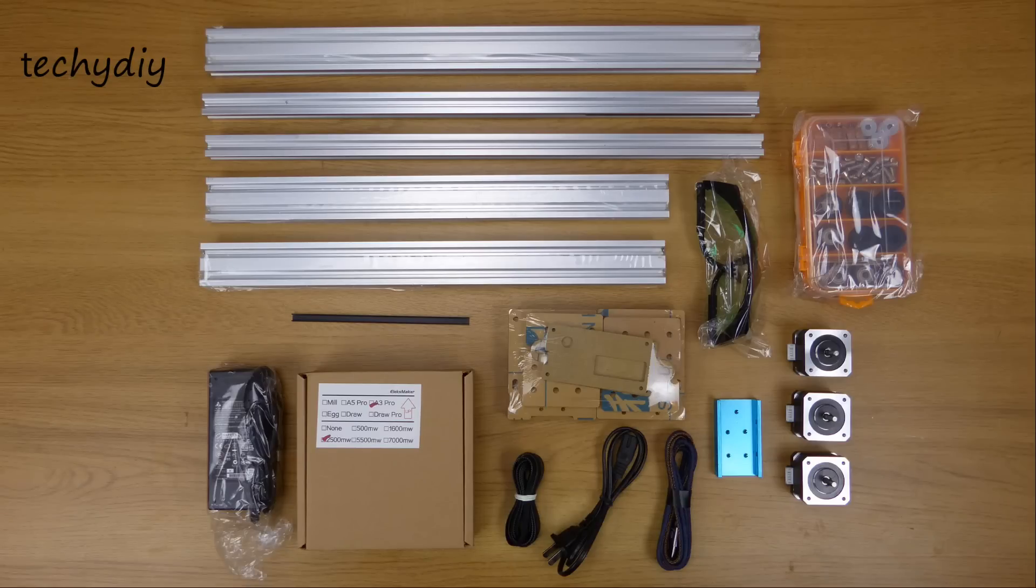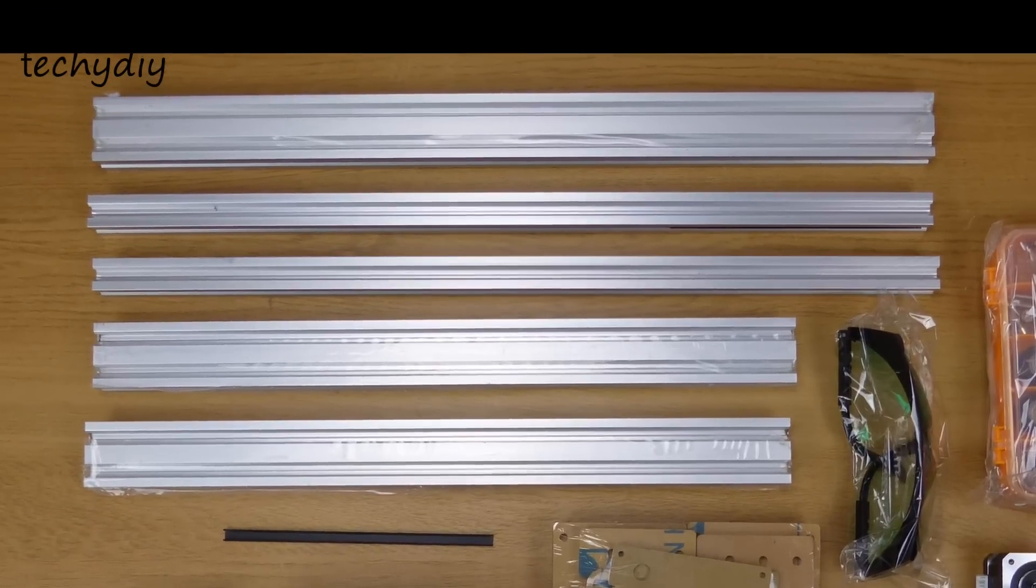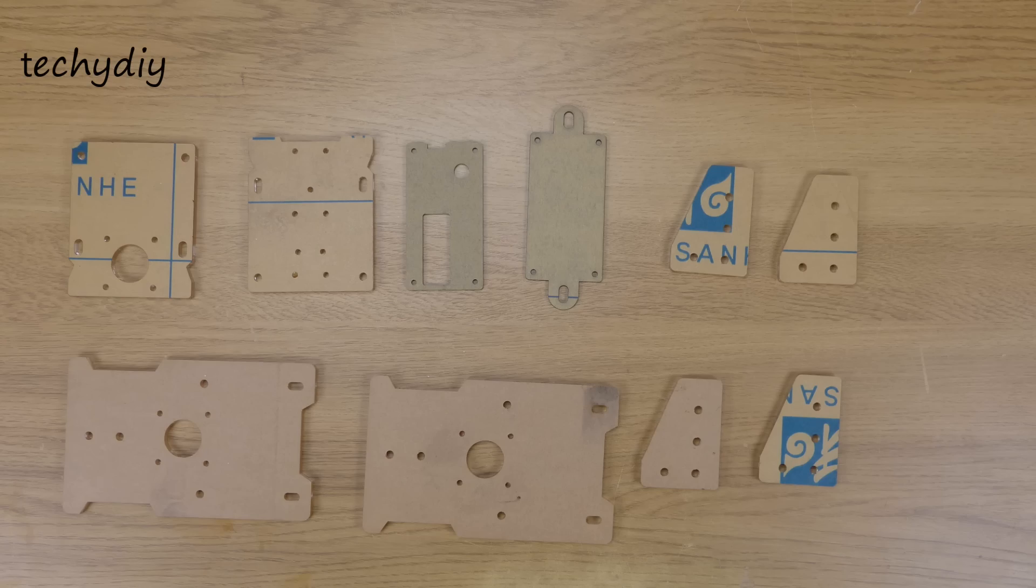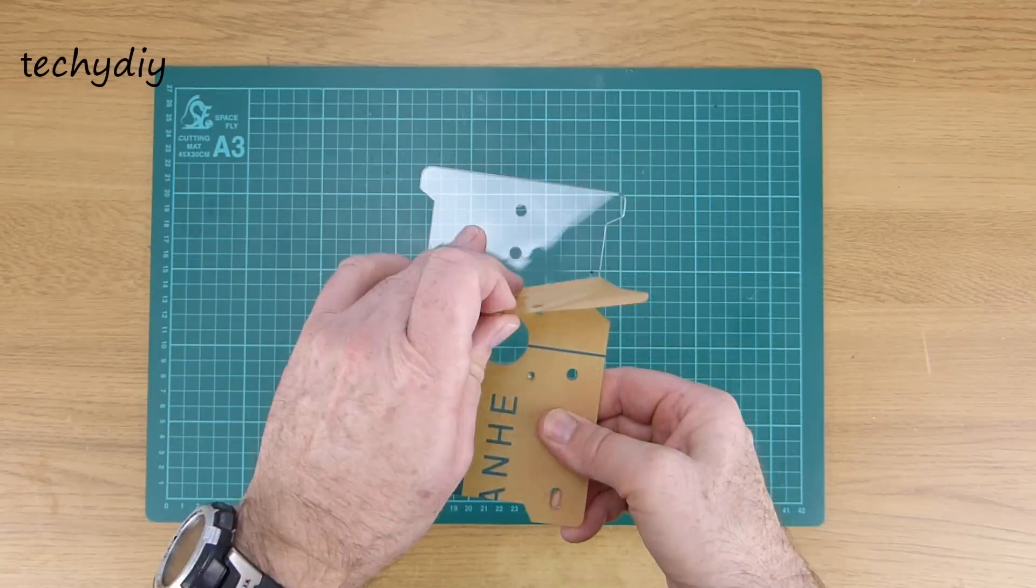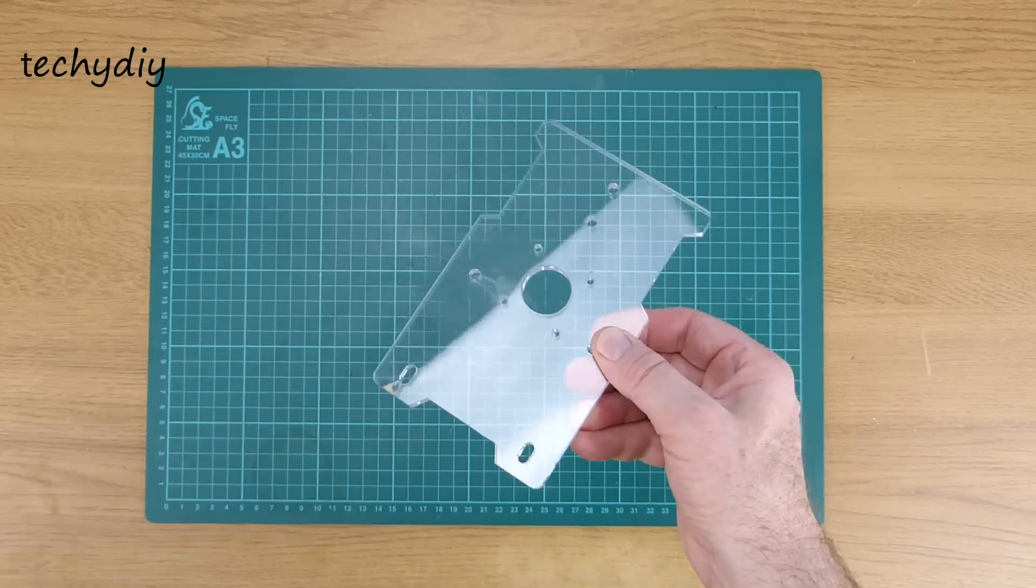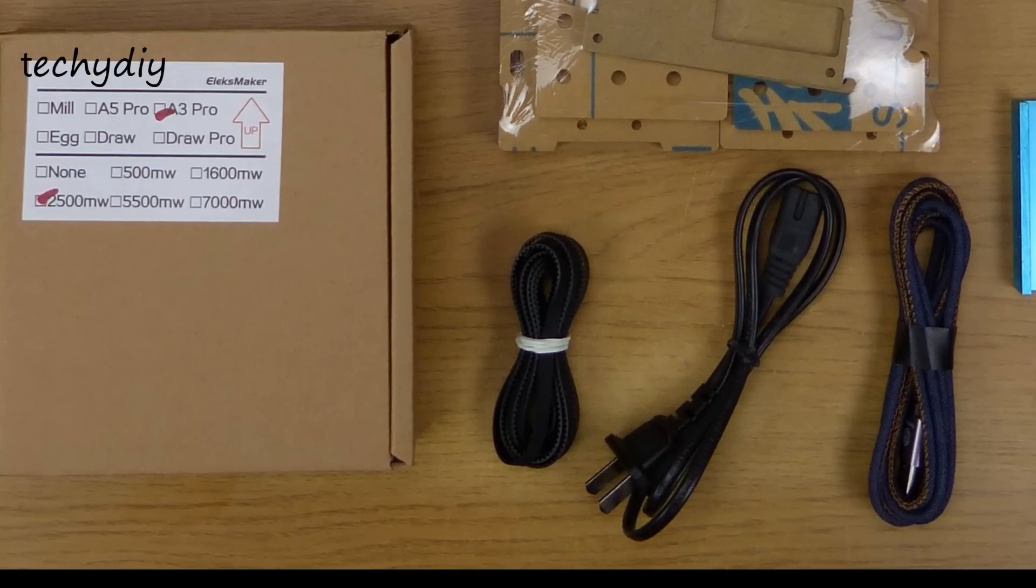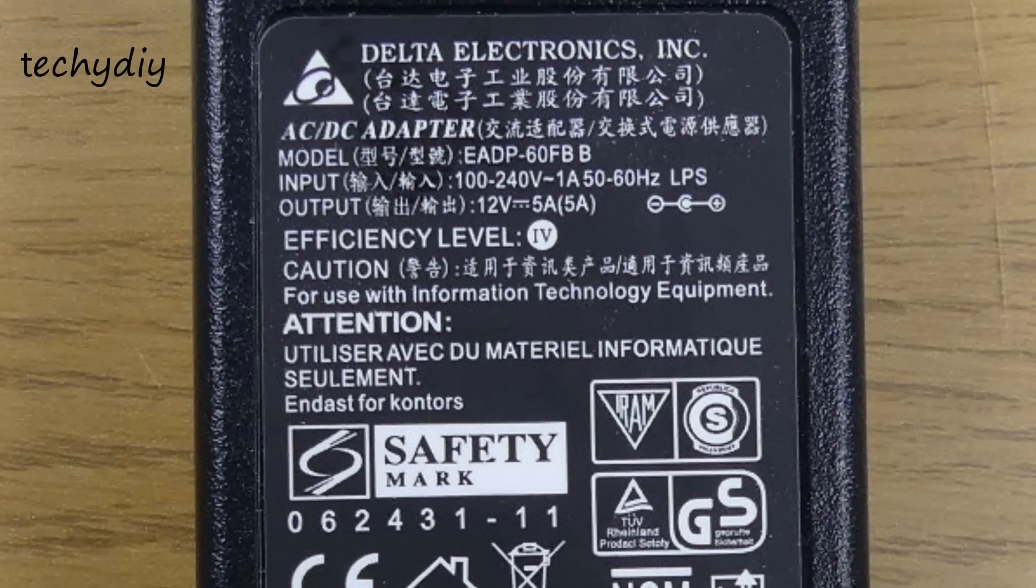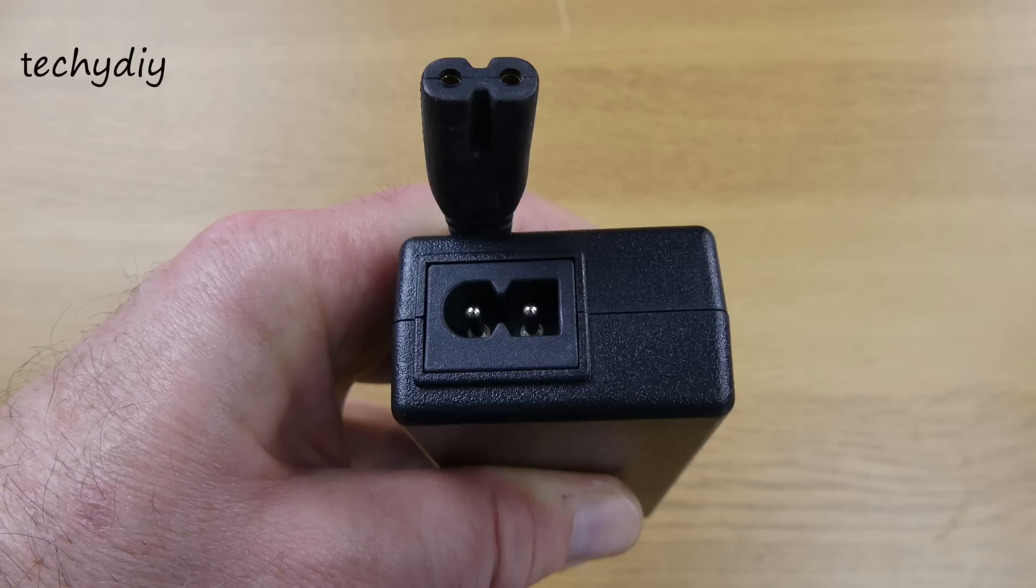And this is what you get in the box. The frame is made from several sections of extruded aluminum profile or rails. A pack of clear acrylic cutouts, three stepper motors, a drive belt, power supply which is rated for 100 to 240 volts and has a figure 8 C8 inlet stroke C7 plug.